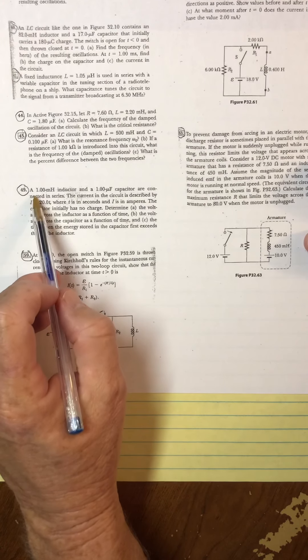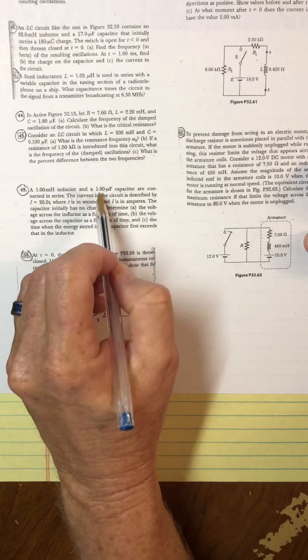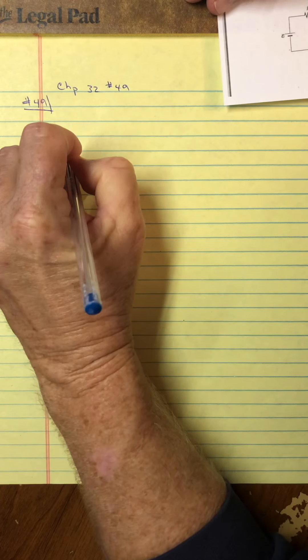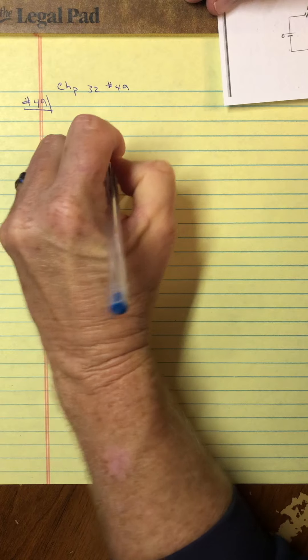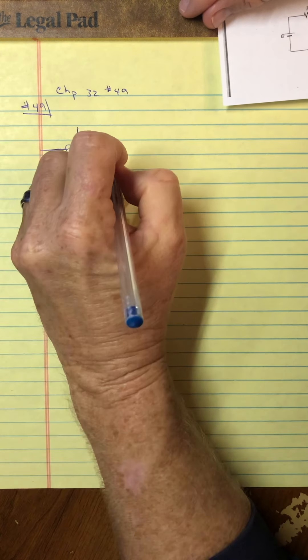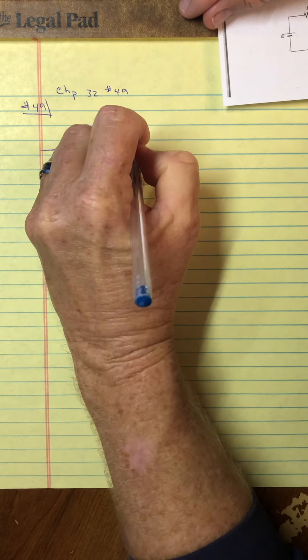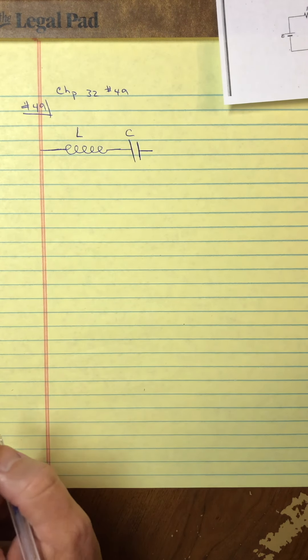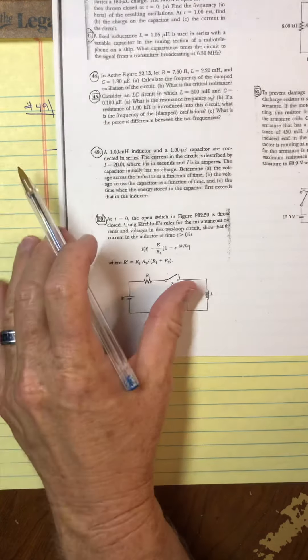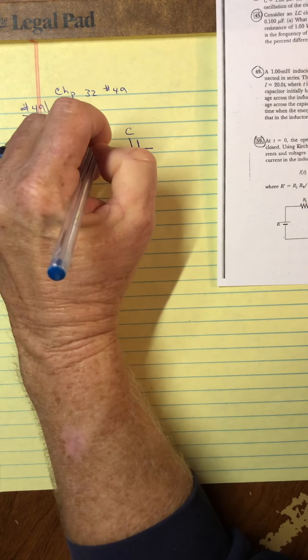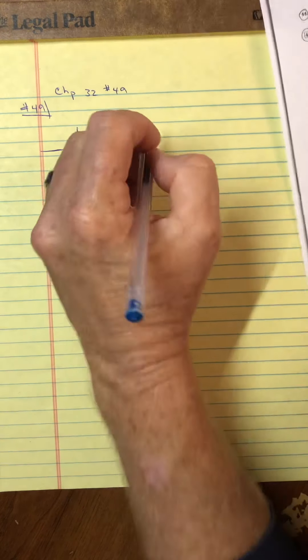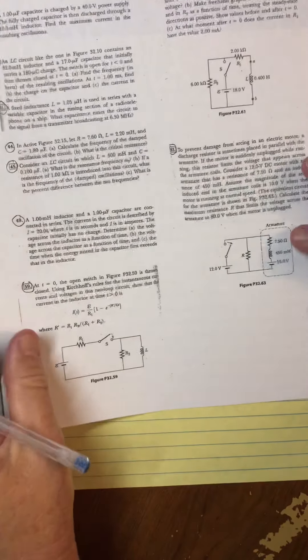It says that a 1 millihenry inductor and a 1 microfarad capacitor are connected in series. All right, so I'm going to take this inductor, so there's the new part for us, the inductor part of our circuits. And then it goes to a capacitor. So I'll put a little C here. We've done a lot of capacitor stuff. Of course, now we're mixing them together.